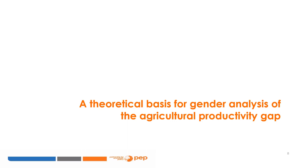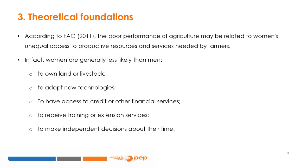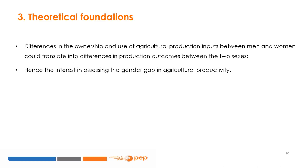A theoretical basis for gender analysis of the agricultural productivity gap: according to the FAO 2011, women's unequal access to productive resources and services needed by farmers could explain the poor performance of agriculture. This results from the fact that women are less likely than men to own land or livestock, adopt new technologies, access credit or other financial services, receive training or extension services, or make independent decisions about their time use. These differences in ownership and use of agricultural production inputs between men and women translate into differences in production outcomes, hence the interest in assessing the gender gap in agricultural productivity.